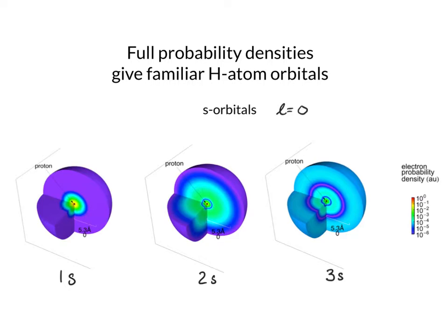When I look at the 2s distribution, if I start at the nucleus and walk out in any direction, I will have a maximum near the nucleus — that sort of yellowish green — but then I go to a minimum or a node at this distance away from the nucleus. There is a radial node in this probability density. So we can see there are sort of two shells: a shell of probability around the nucleus, and then another shell where we have another maximum out here. The radial probability for n equals 2 has one radial node.